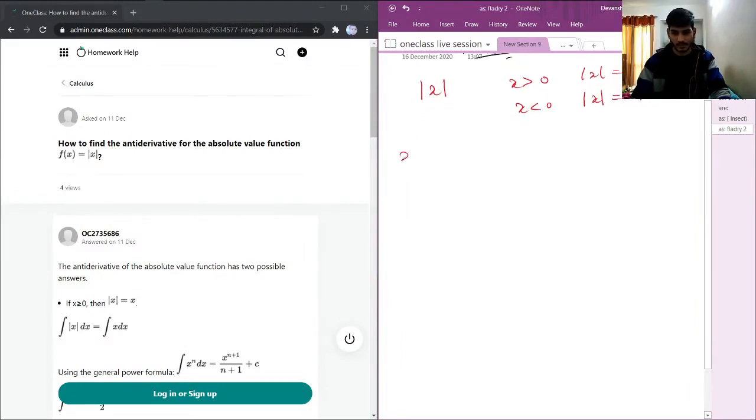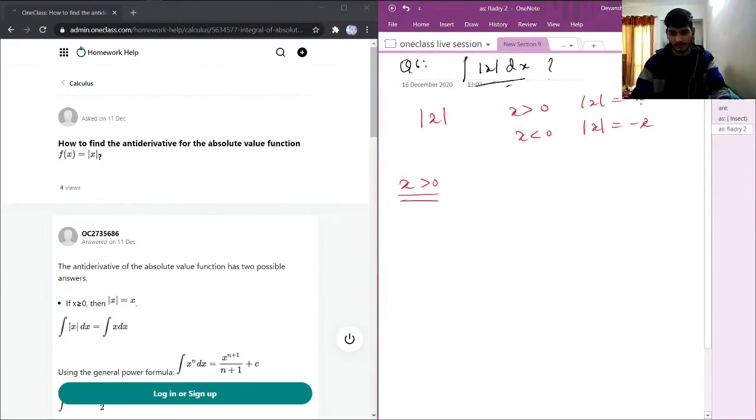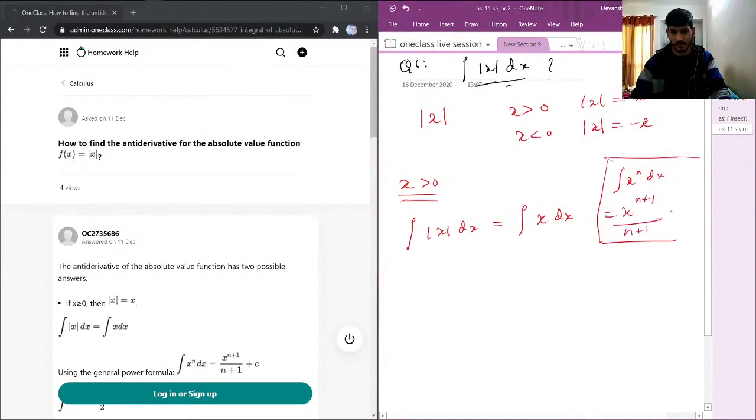So first we will go for x greater than 0. This will become integral of magnitude of x dx, which will be integral of x dx. I will use this formula of integration: x^n becomes x^(n+1)/(n+1). For the constant term, this will become x²/2 plus c.